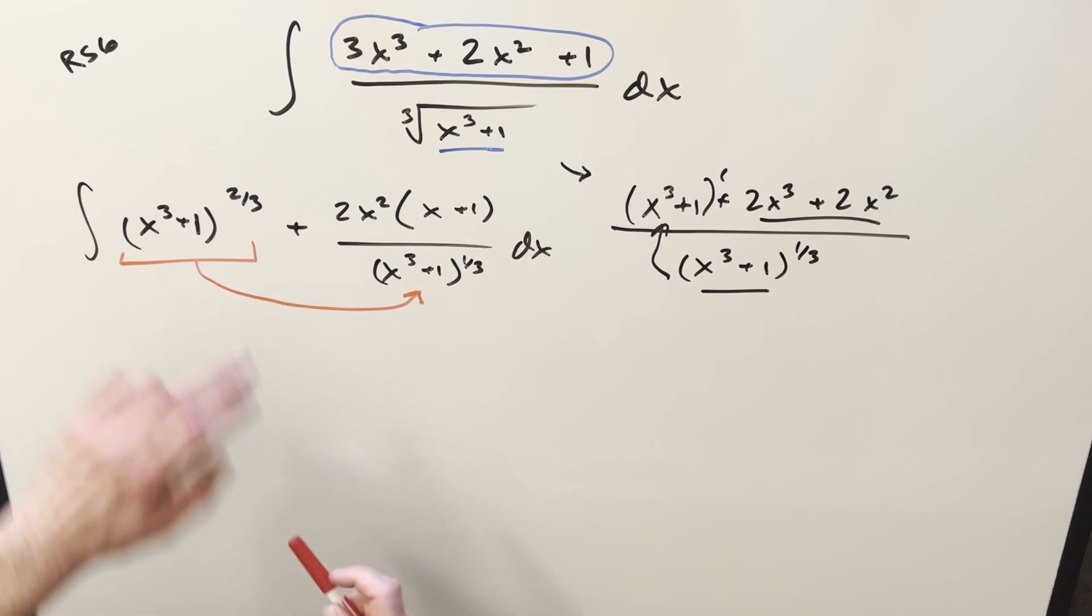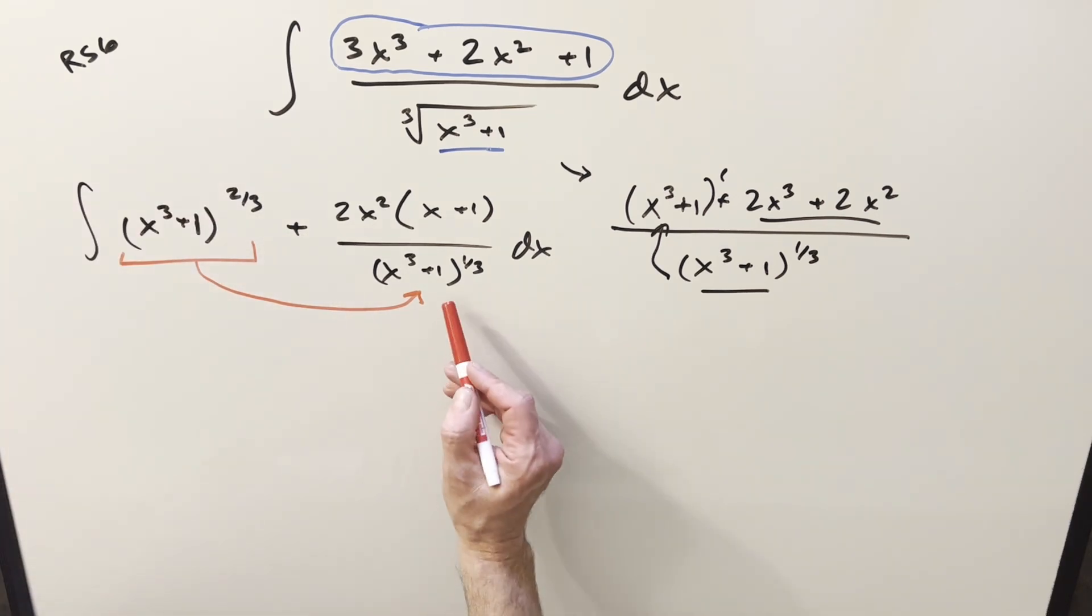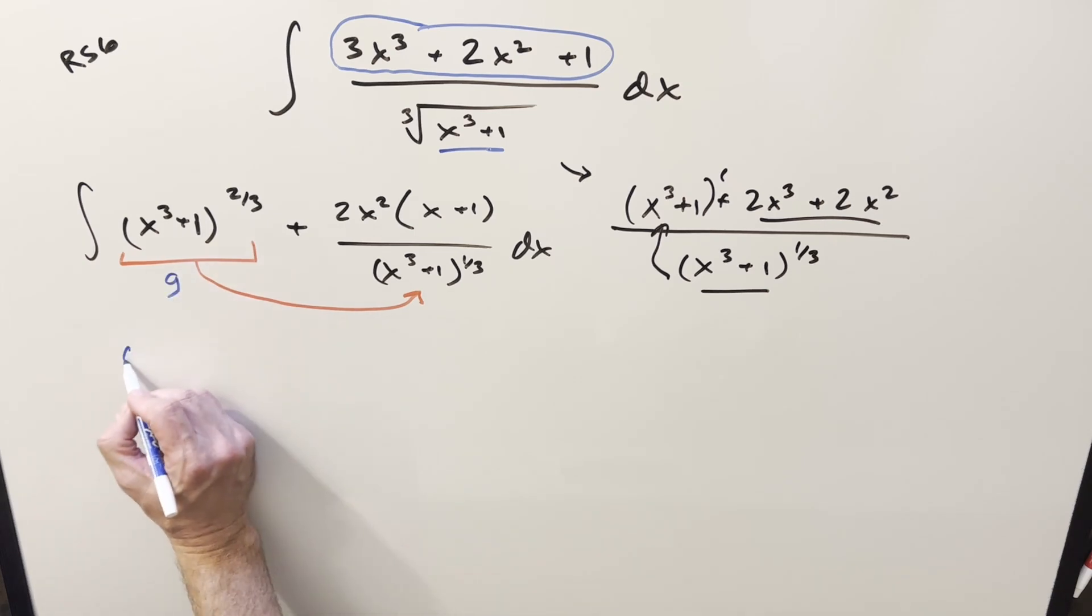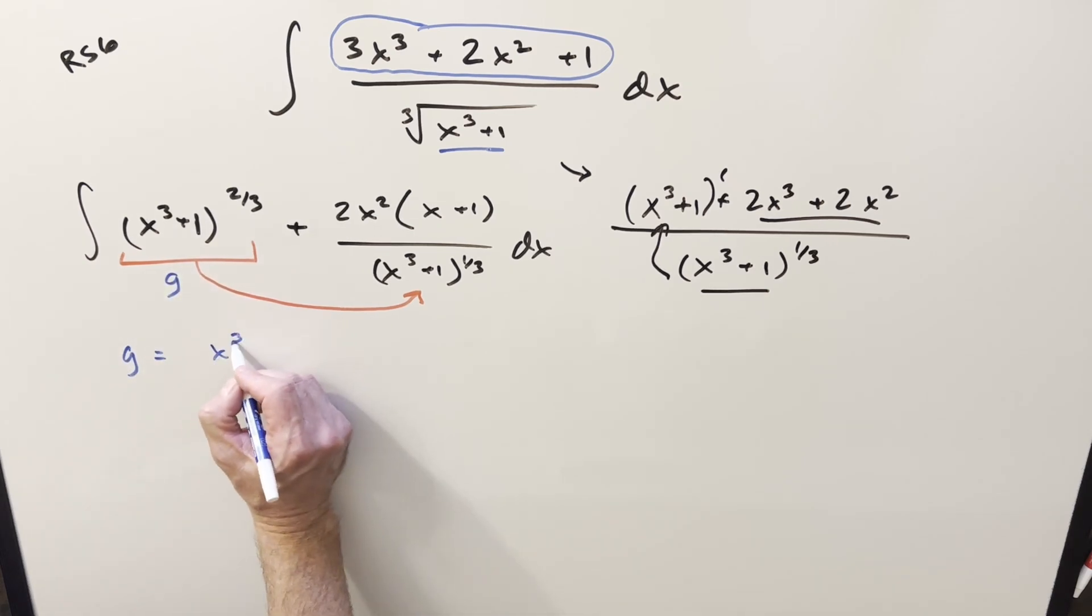Because when you do power rule, you subtract 1 from this, you're going to have minus 1/3. And this is 1/3, but it's in the denominator. So what I want to do is, let's call this piece right here g. So we'll say g equals x cubed plus 1 to the 2/3. And then let's find the derivative on this.